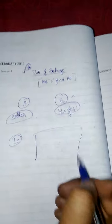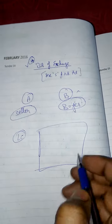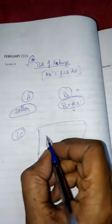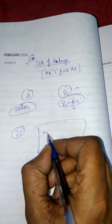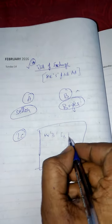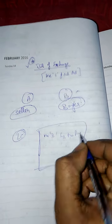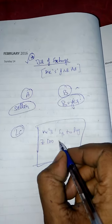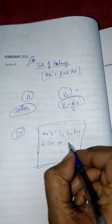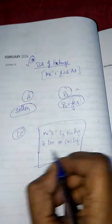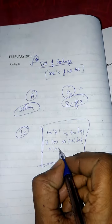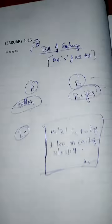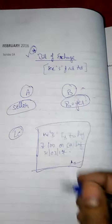A prepares the bill, makes it, and signs it. The bill states that Mr. B has to pay rupees 100 on or before 31st March 2017. So this is the bill that A has made.